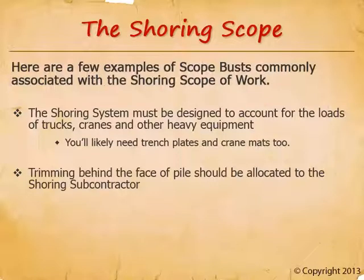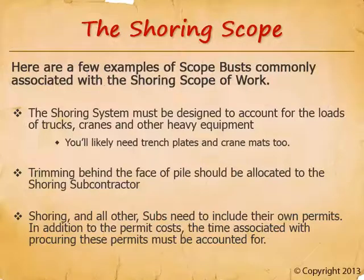Trimming behind the face of pile should always be allocated to the shoring subcontractor — be careful, because they very often try to exclude this work in their bids. The mass excavation subcontractor will excavate to a relatively straight line along the face of piles, but lagging boards are tucked behind the front flange of the piles, and the shoring subcontractor needs to hand-trim for the lagging board installation, typically with handheld pneumatic equipment. All subcontractors, including the shoring sub, need to include procuring and paying for their own permits — not just the cost of the permit, but all interactions with the city. If the general contractor doesn't allocate this work to the subs, they're going to spend a tremendous amount of time waiting in line at the city for each and every deferred permit. The general contractor's time is much better spent managing the project.